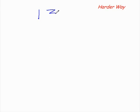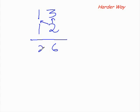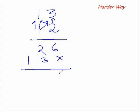So let's see the usual way of multiplying 13 with 12. So 2×3 is 6, 2×1 is 2, 1×3 is 3, 1×1 is 1. Now add the numbers in the column. So 6, 3 plus 2 is 5, and this is 1.